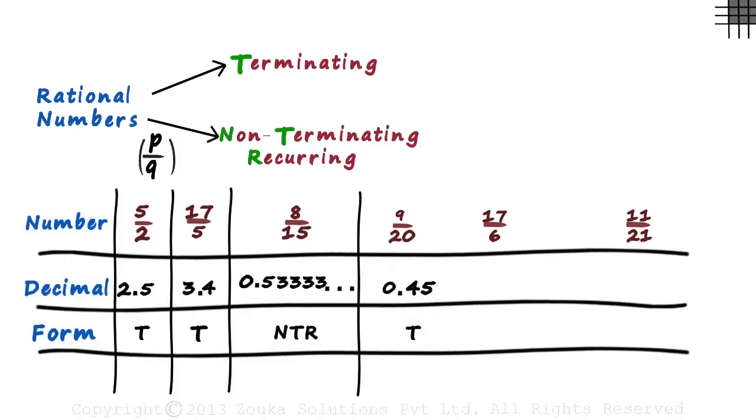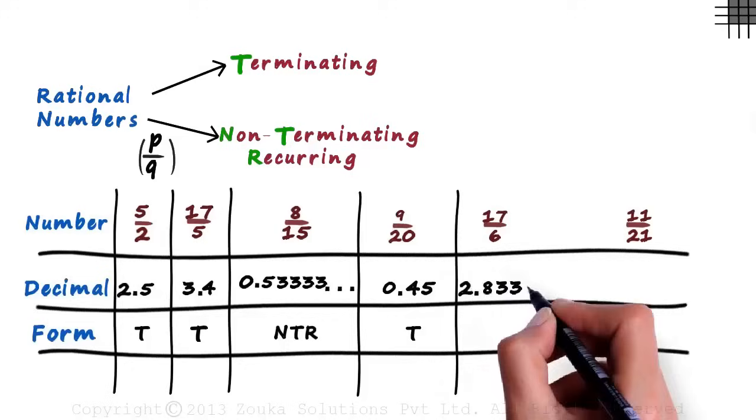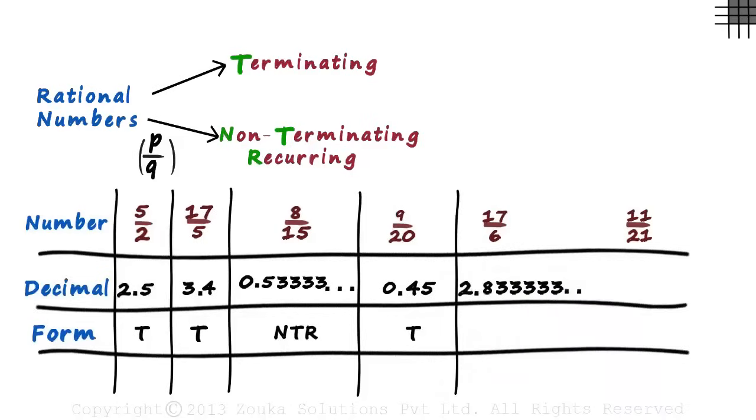So what we are doing here is calculating the decimal value of all the numbers and classifying it into terminating and non-terminating recurring decimals. Only two more numbers remain. 17 by 6 equals 2.83333 and so on. So correct, it gets classified as non-terminating recurring fraction.